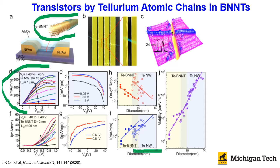For atomic chains filled inside boron nitride nanotubes, their diameters are smaller than 10 nm, and it shows that they become n-type in transport nature. This is due to the lifting of the Fermi level of tellurium atomic chains inside boron nitride nanotubes that allows the n-type carrier, which is the electron, to become the dominant transport agent of the transistor. N-type transistors show higher transport mobility compared to the p-type holes.